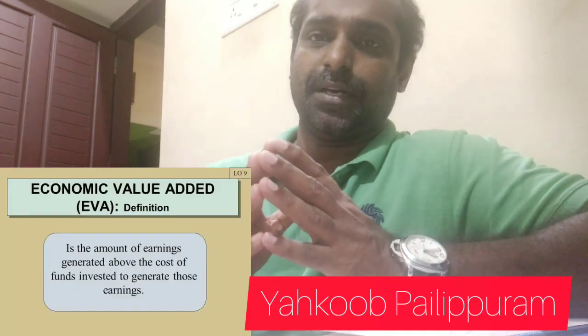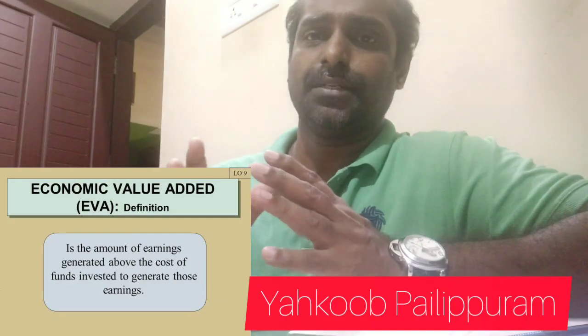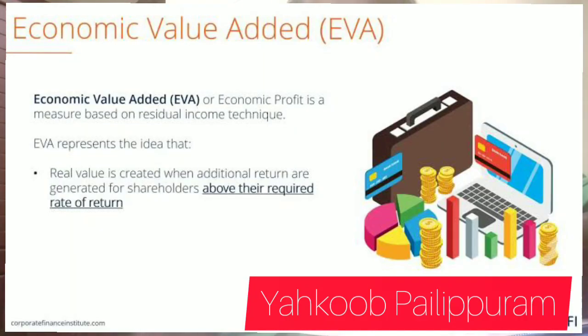These are the two indicators. This is called EVA, Economic Value Added, and MVA, Market Value Added. This is the difference between Net Operating Profit and Cost of Capital. This is the first module of a firm called Investors.